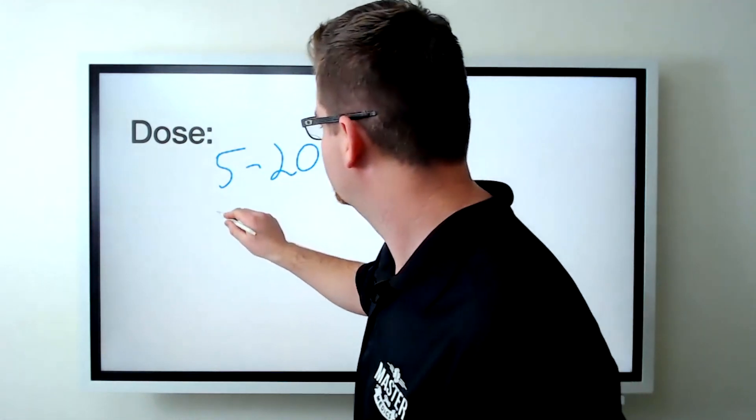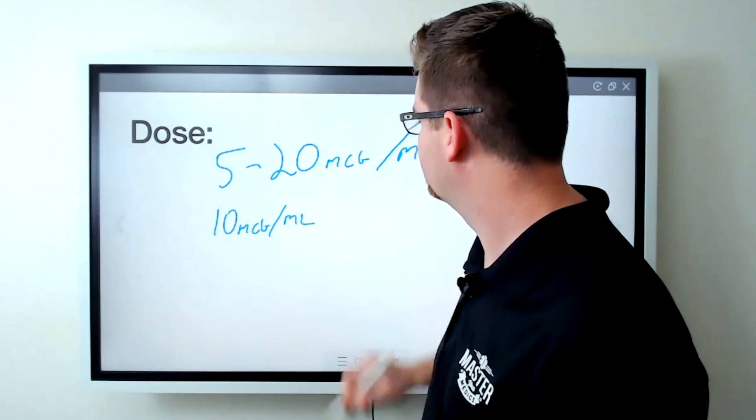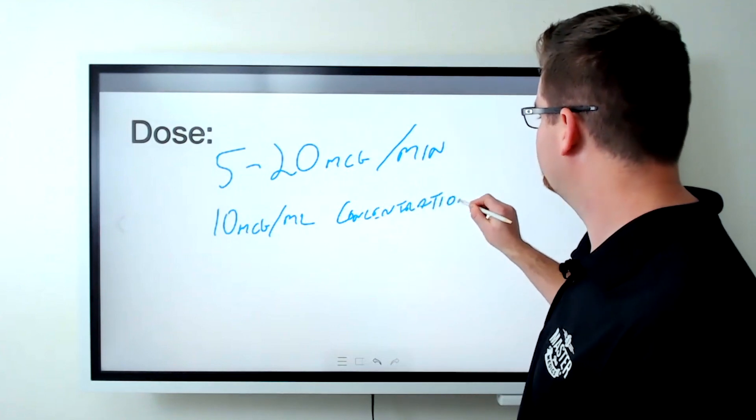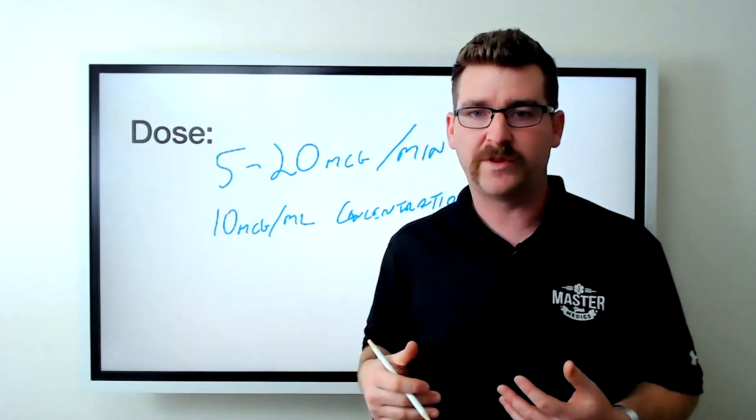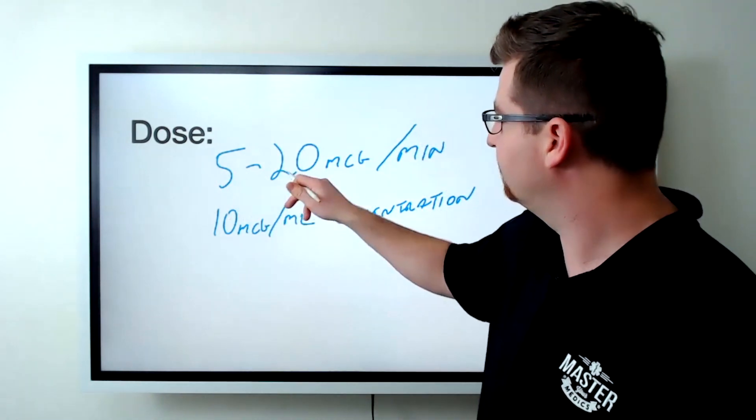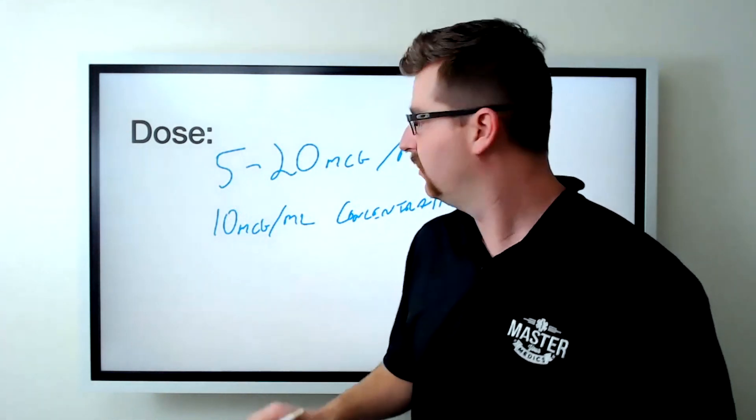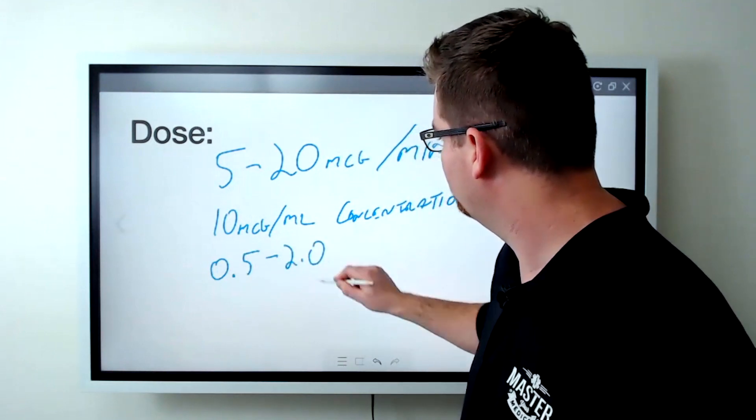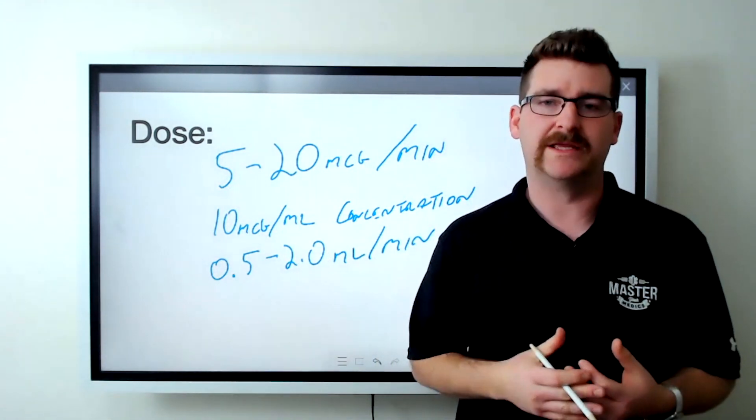Let's make it super easy. Let's use a 10 microgram per ml concentration. Now with that super easy concentration of 10, I like tens. I've got 10 fingers. I have 10 toes. It's easy to move decimal places. All we have to do if we're using 5 to 20 micrograms per minute and we have 10 micrograms per ml, that's 0.5 to 2.0 milliliters per minute. Incredibly, incredibly easy.